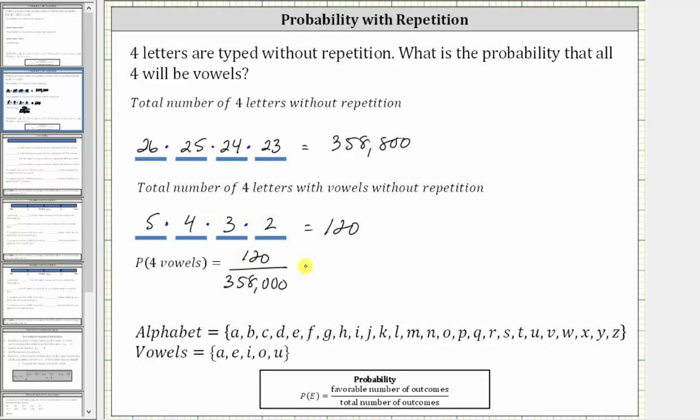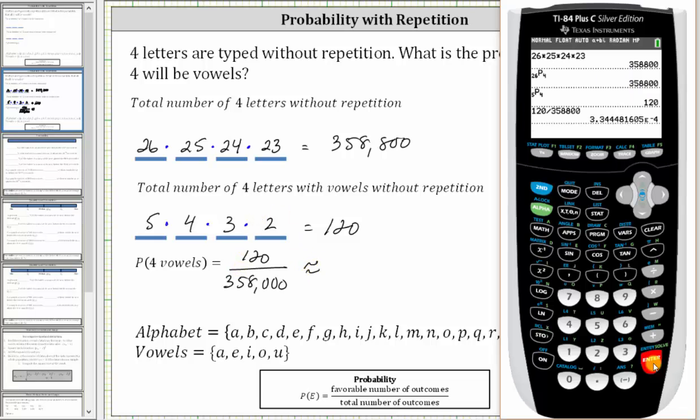Let's also show this as a decimal and a percent. Notice the quotient is in scientific notation. Because of the e negative 4, this means approximately 3.34 × 10^-4.